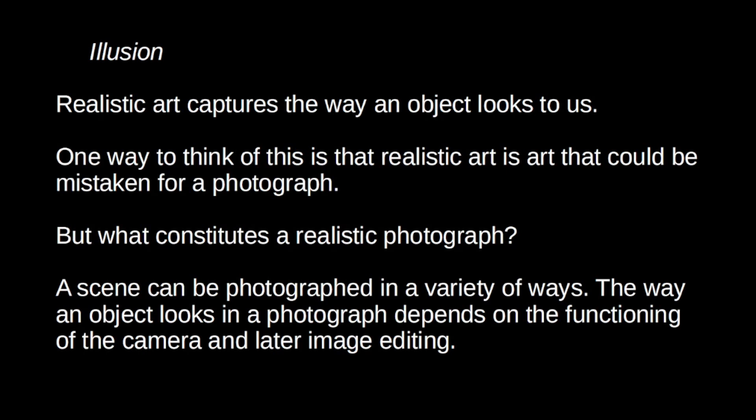One way to think of this is in terms of photographic illusion. The realistic painting could easily be mistaken for a photograph. But this just pushes the problem one step back because now we have to ask: what exactly constitutes a realistic photograph? The way a photograph looks will depend on the functioning of the camera and any further editing or manipulation of the image. A scene can be photographed in a variety of ways — there is no one way that a scene will look in a photograph.